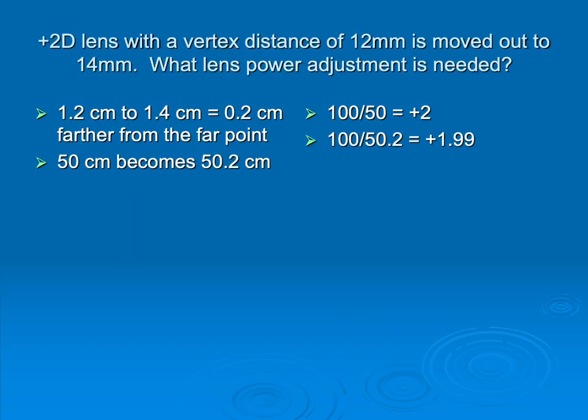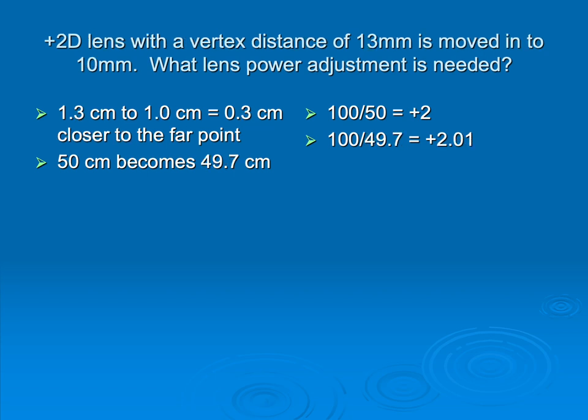So here's how you work it. I'm going to take that 12 millimeter vertex distance and increase it to 14 millimeters because I'm moving the lens away from the eye. And so that's a 0.2 centimeter difference. So I had a plus two lens, which 100 divided by 50 is plus two. But now I'm not 50 centimeters for my focal length. Now I'm 50.2 centimeters. So 100 divided by 50.2 becomes plus 1.99. What if I had a plus two lens with a vertex distance of 1.3 centimeters and I'm going to move it closer to the eye? I'm going to reduce that vertex distance. So now I'm 0.3 centimeters closer to the far point. So my plus two focal length of 50 centimeters, I now have a focal length 0.3 centimeters closer. So only 49.7. You can see that difference is plus two becomes plus 2.01.